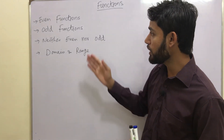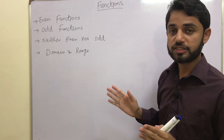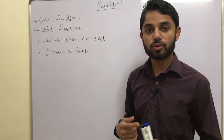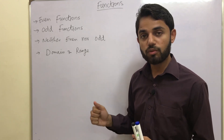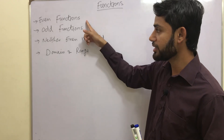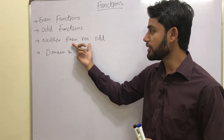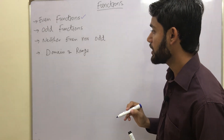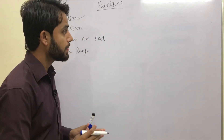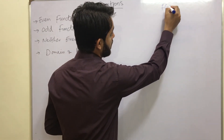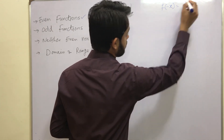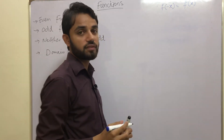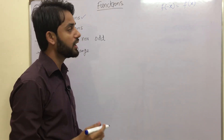We will emphasize the graphical way as well. It's not always the case that you will have a function y = f(x) with given values to determine whether it is even or odd. We will also learn the graphical way — what happens when a function is even, when it is odd, and when it is neither. First, we learn the definition: a function is said to be an even function when f(-x) = f(x).